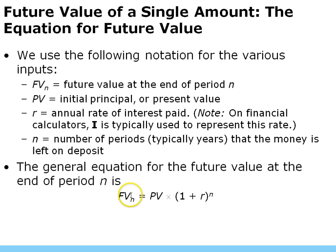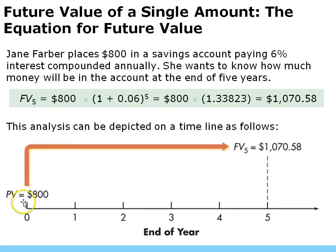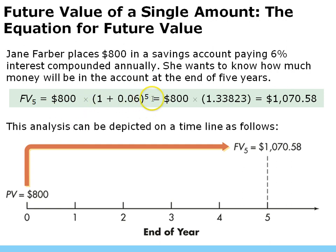The formula to find future value over N periods is: FV = PV × (1 + R)^N, where R is the interest rate and N is the number of periods — typically years, but if compounded quarterly or monthly it could be the number of years times the frequency. For example, with a present value of $800 invested at 6% for five years: 800 × (1.06)^5 = 800 × 1.3382 ≈ $1,070. That's how you calculate the future value.